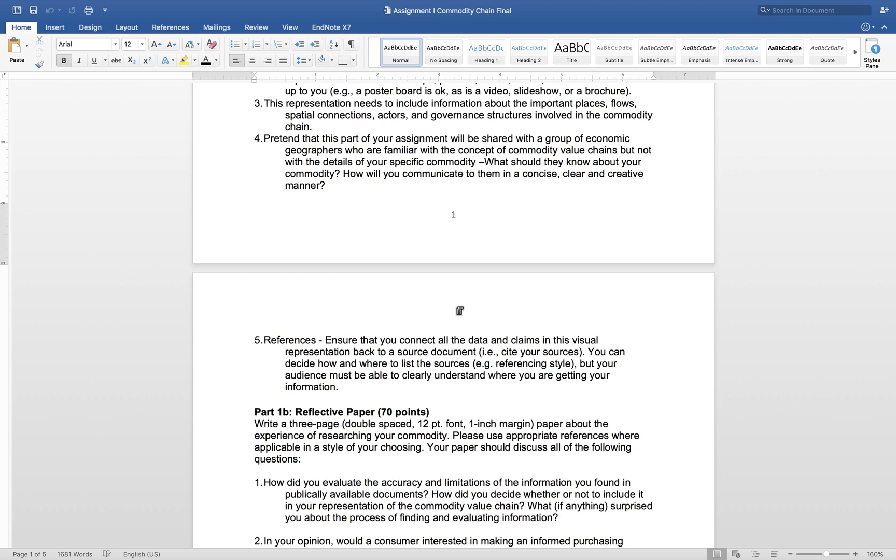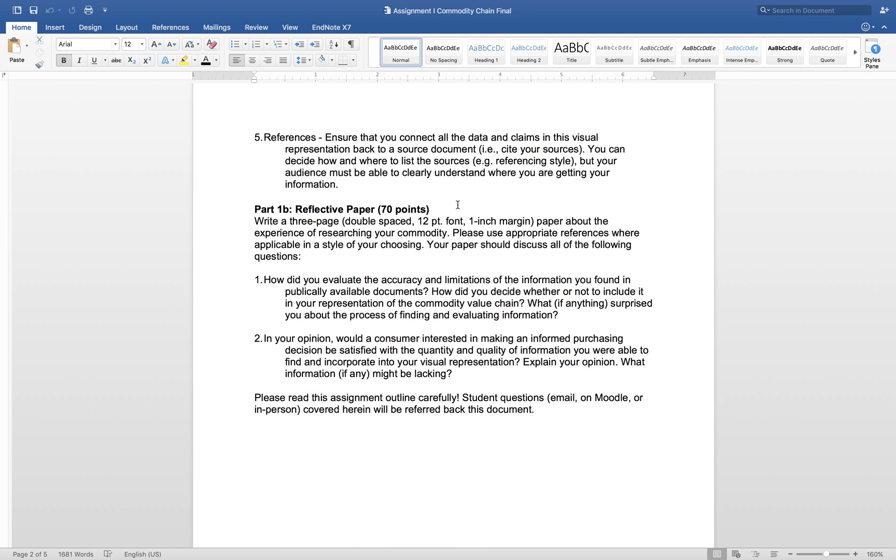The second part is the reflective paper, 70 points. The directions are given here about the specifics. There's a couple of questions. You can elaborate a little bit on the commodity chains that you've found. A couple of things you can address: How do you evaluate the accuracy and limitations of the information you found for this particular product, and how did you include it in your presentation? As a consumer or as a researcher, what surprised you about this process of finding and evaluating information about this commodity? The second part is, as a consumer interested in making informed decisions, would this information that you've provided be satisfactory, both in qualitative and quantitative terms? How does this commodity come into fruition? What information might be there, what information is lacking?